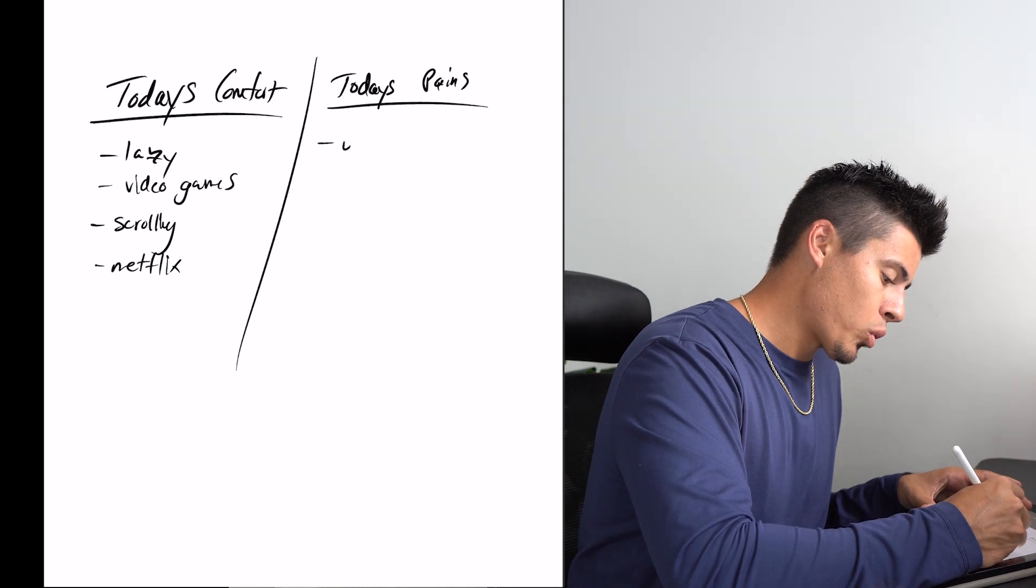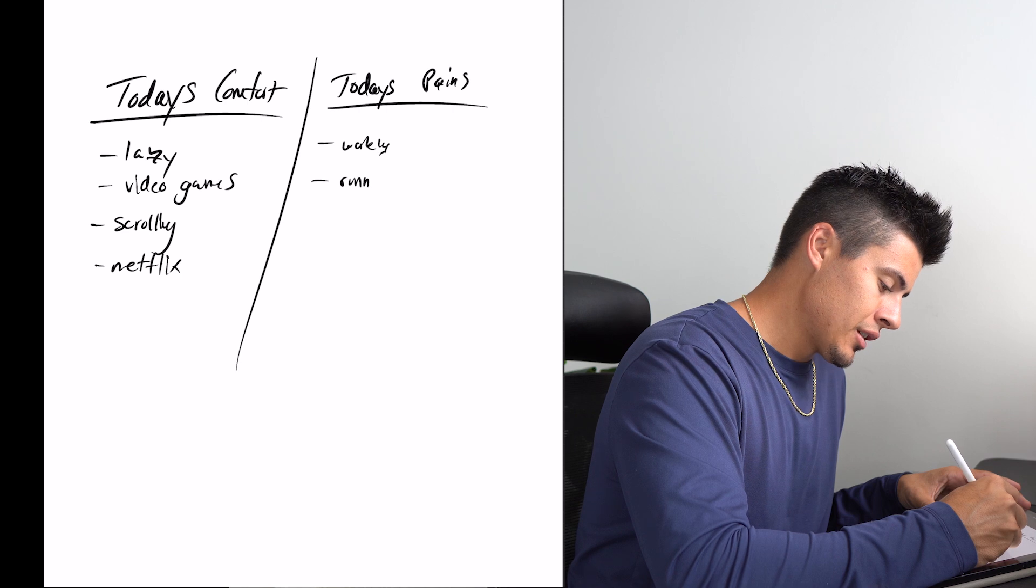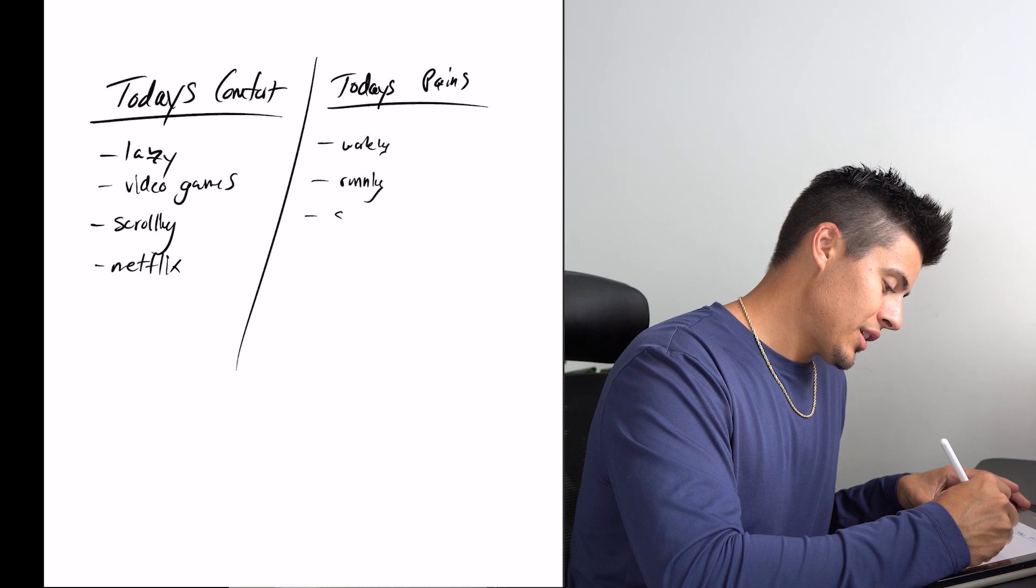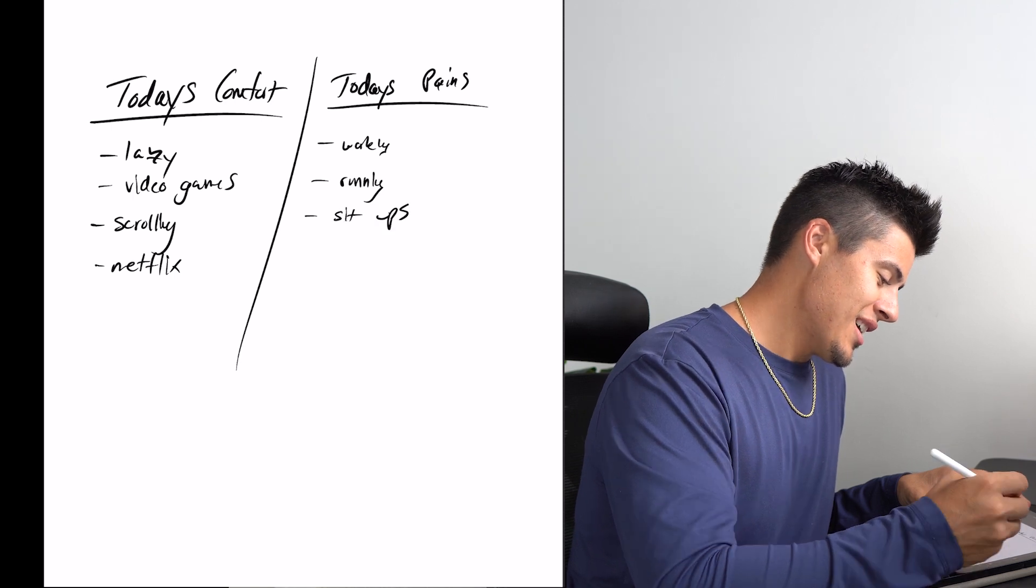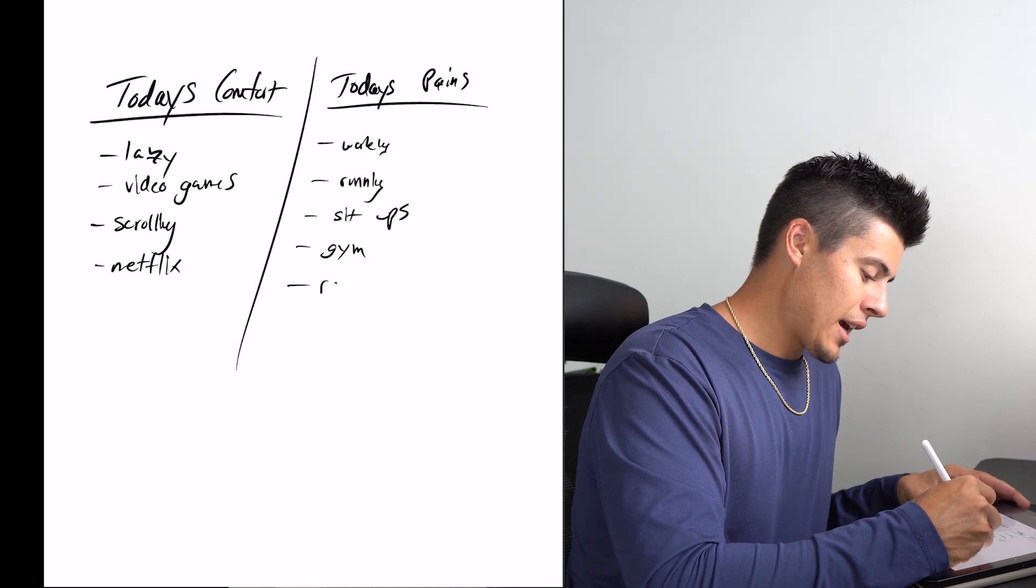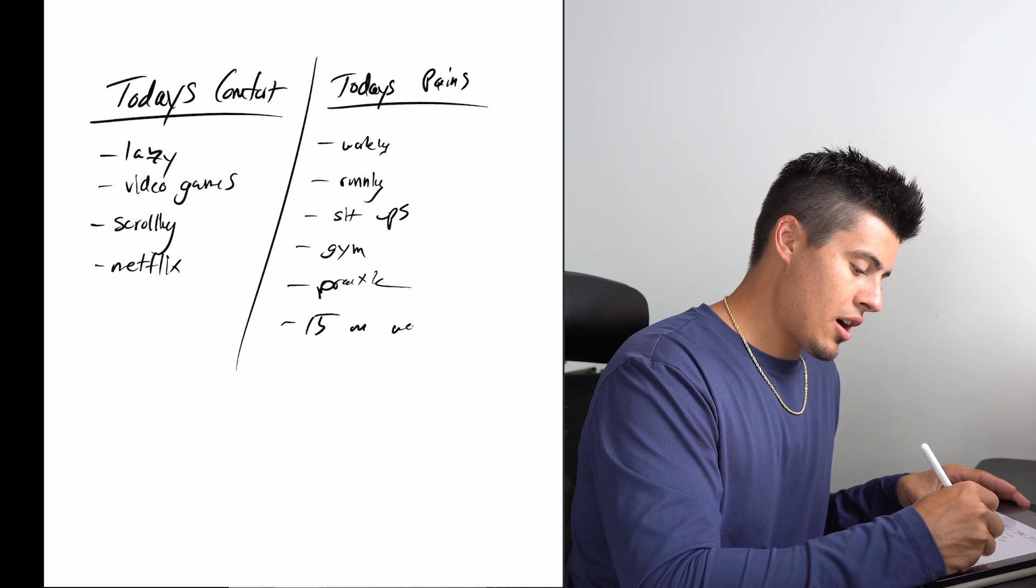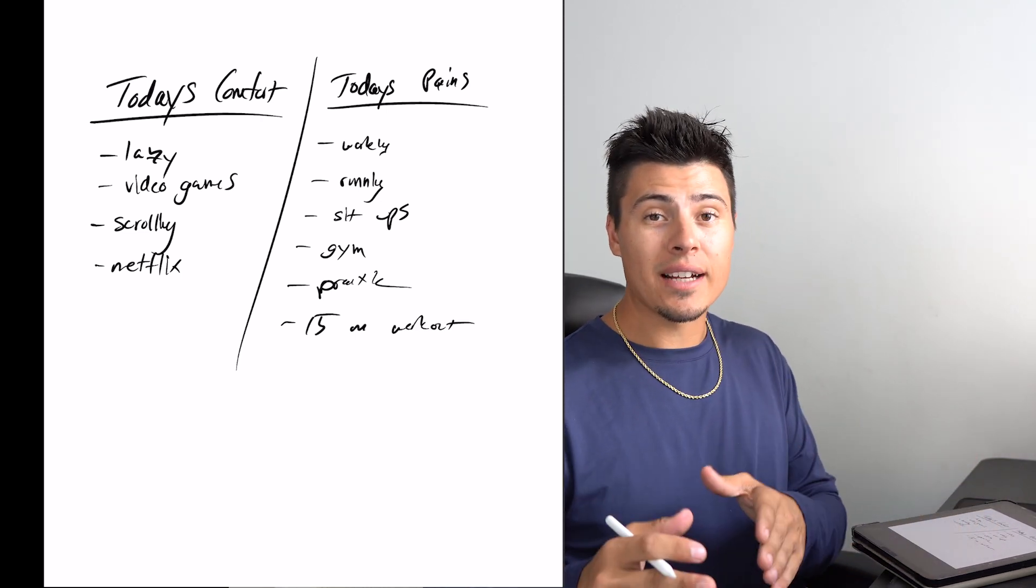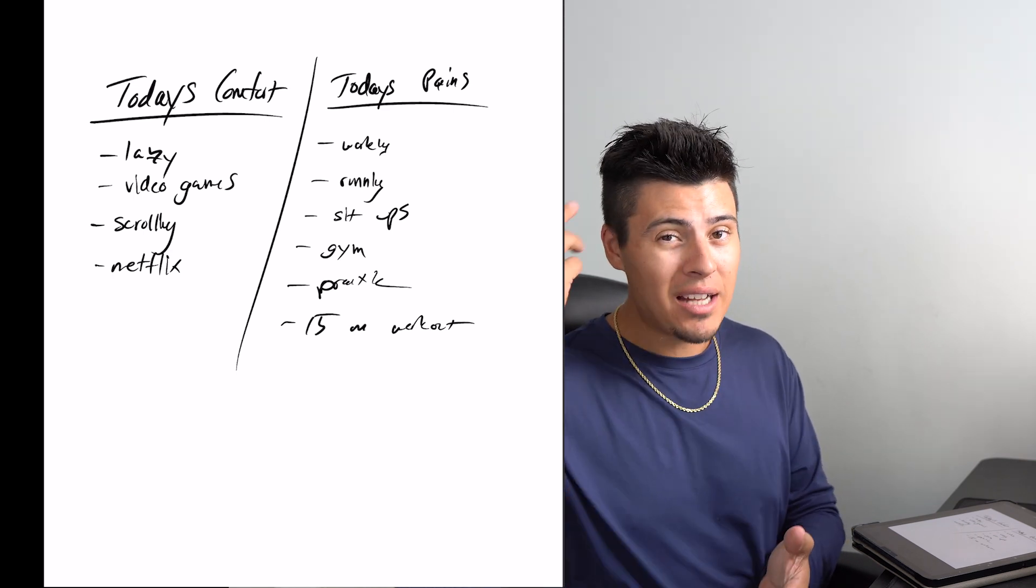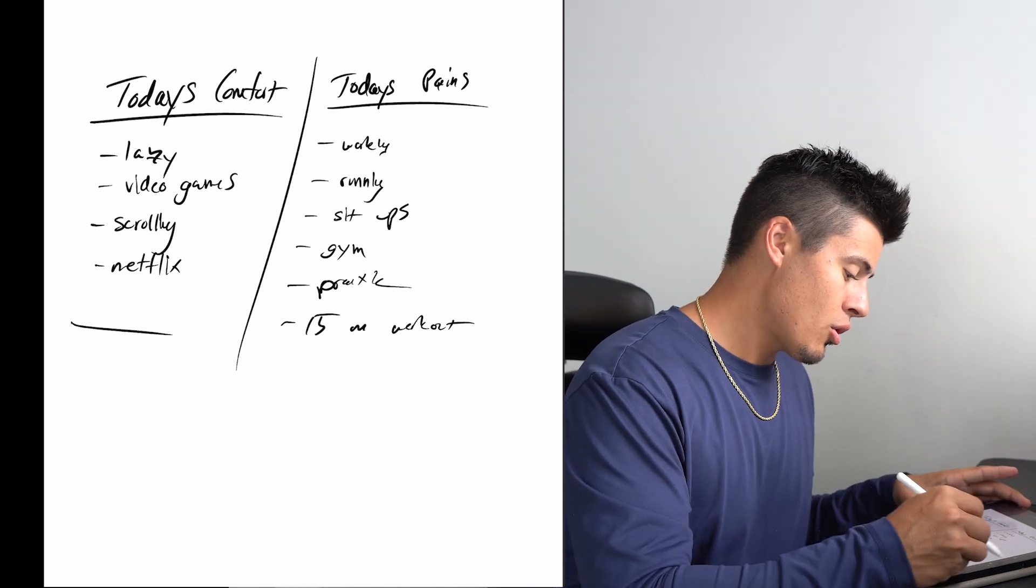But today's pains could be like working out, doing the stuff that we don't really want to do. Running, not everyone loves running. I'm starting to like it a little bit more. But sit-ups or whatever. Today's pains could be going to the gym, practice. Really, you could do like a 15-minute workout. These are all things that are technical pains for today because not everyone wants to do them. And mentally, we can talk ourselves out of these tasks a lot of the times.